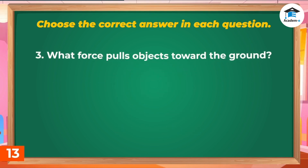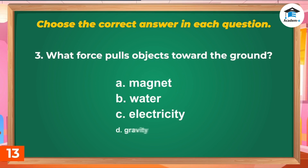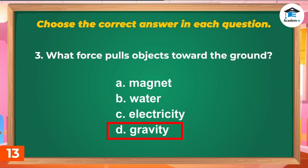Question 3: What force pulls objects toward the ground? A. Magnet, B. Water, C. Electricity, D. Gravity. Answer: D. Gravity.